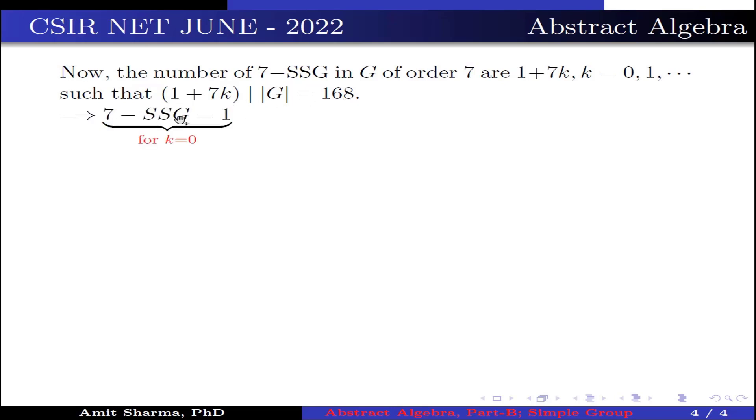This implies the number of 7-SSG is either 1 when k is 0, or the number of 7-SSG is 8 when k is equal to 1 are possible. For rest of the value of k, 1 plus 7k does not divide 168.